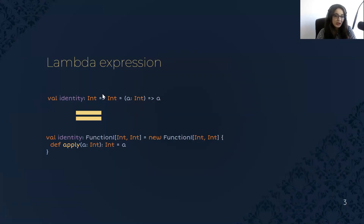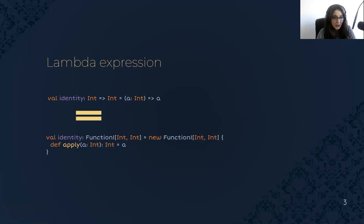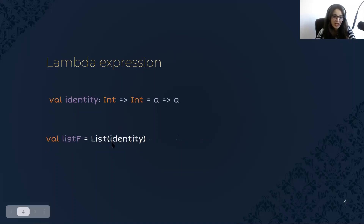Also, if we have any function with n arguments, it will be translated to FunctionN. So identity is like an object. This is why in Scala we treat functions as values — we can pass them through different functions. We can even create a list with elements of type function.